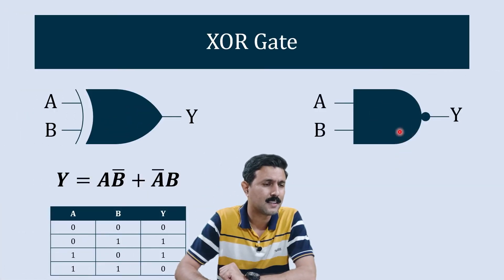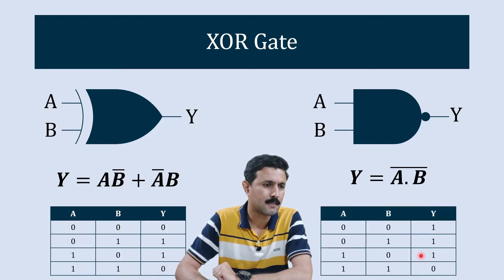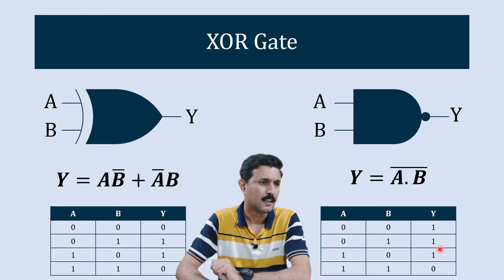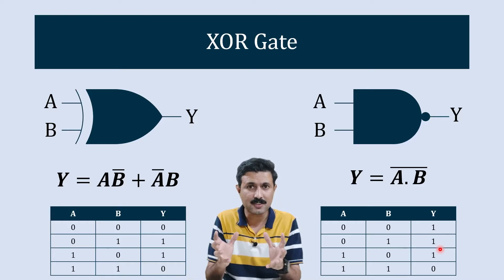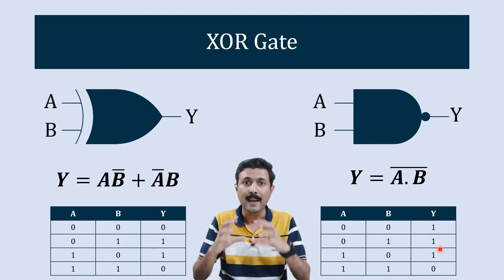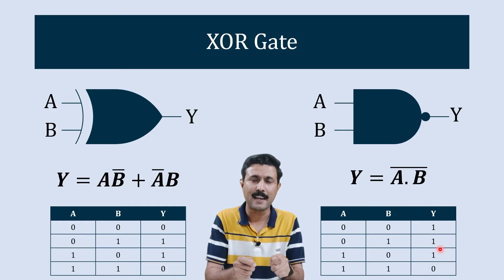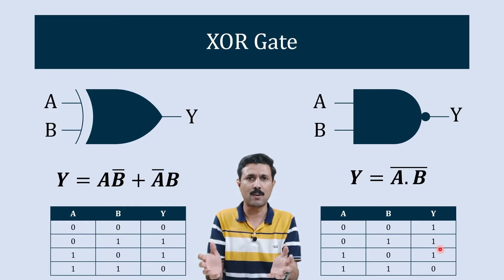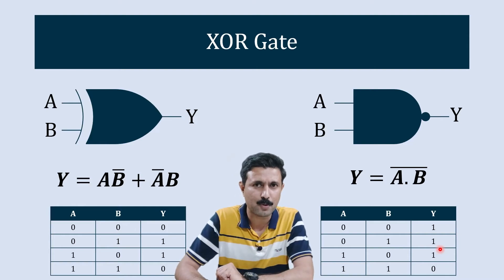Here is the symbolic representation of NAND gate, and here we have the output equation of NAND gate, and then we have the truth table of NAND gate. We are going to use all this information to develop a circuit that uses only NAND gates, and the output of that circuit will be exactly similar to the XOR gate — and that is what is called XOR gate using NAND gate. So now let's explore that.